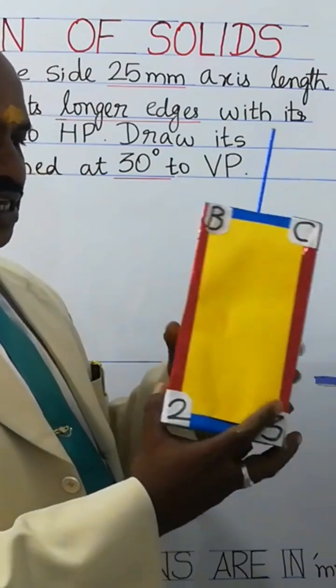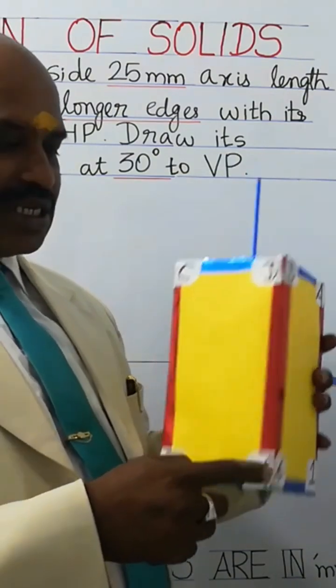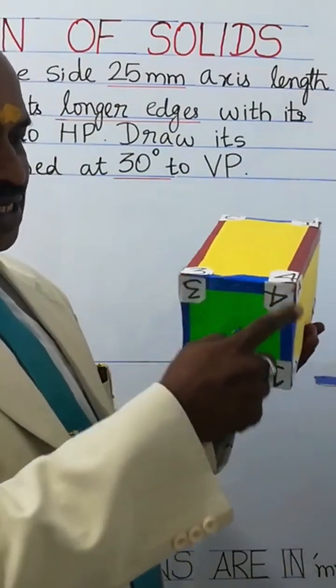These four faces are there, called the rectangular faces. These are red color long edges, vertical long edges. This is base side and base edges.